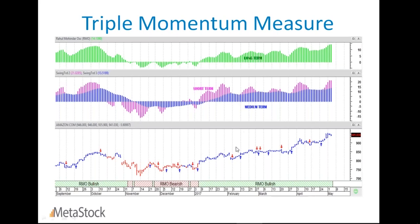What I finally want you to do is take a buy trade when all three trends are in agreement — short term, medium term, and long term all aligned to signal a breakout. On the price chart, you'll see a ribbon along the x-axis with RMO bullish and RMO bearish markings. That ribbon lets you easily see if the RMO is above or below zero, even if you have the oscillator minimized. The bar colors are painted based on the medium-term trend, and arrows represent the short-term trend.